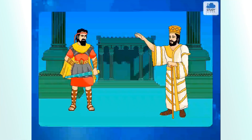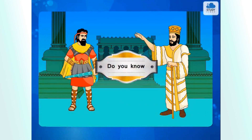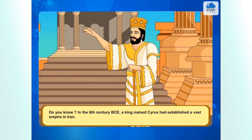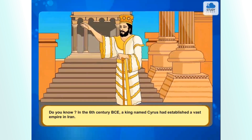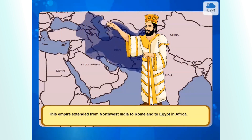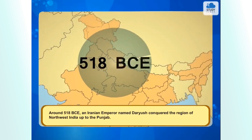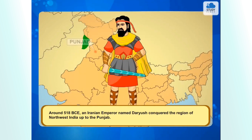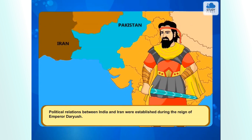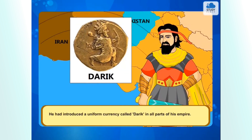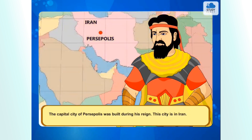Let us revise the portion that we have learned today by reading the pages from the textbook. Do you know? In the 6th century BCE, a king named Cyrus had established a vast empire in Iran. This empire extended from northwest India to Rome and to Egypt in Africa. Around 518 BCE, an Iranian emperor named Dariush conquered the region of northwest India up to Punjab. Political relations between India and Iran were established during the reign of Emperor Dariush. He introduced a uniform currency called Darik in all parts of his empire. The capital city of Persepolis was built during his reign; this city is in Iran.